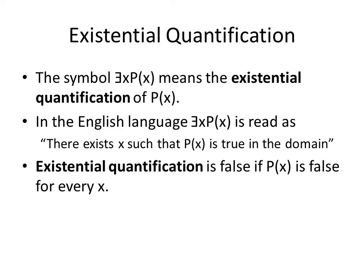Existential quantification is expressed by this symbol. In the English language, existential quantification is read as 'there exists X such that P(X) is true in the domain.' That domain must be specified. Existential quantification can only be false if P(X) is false for every single X in the domain.